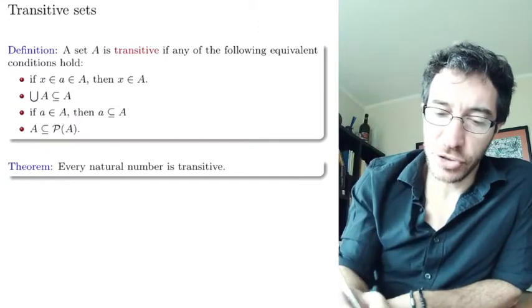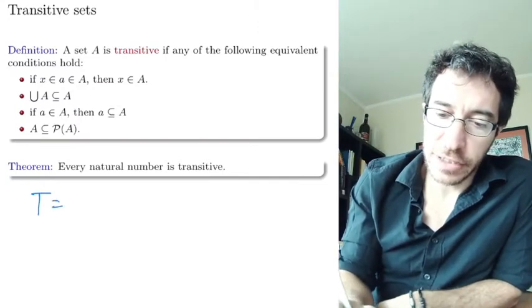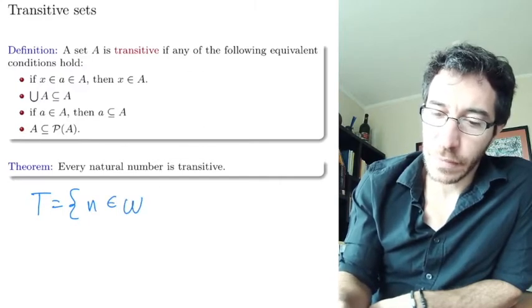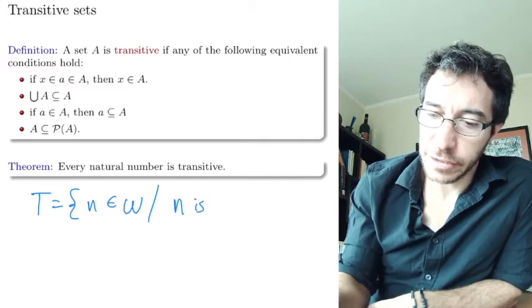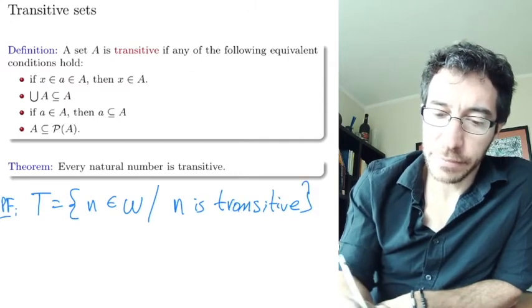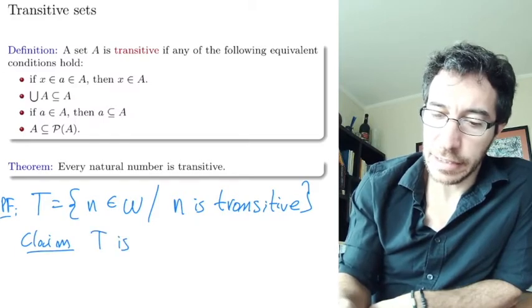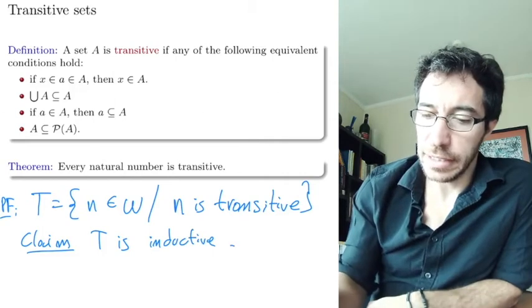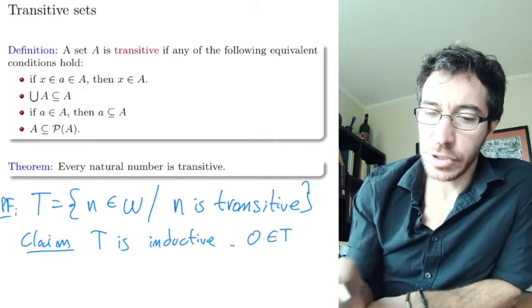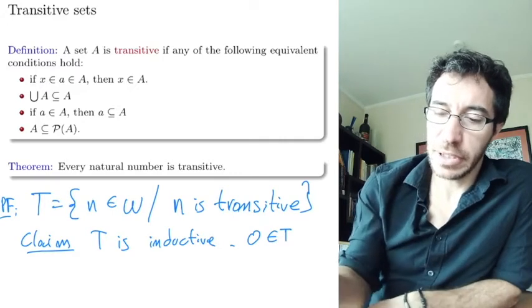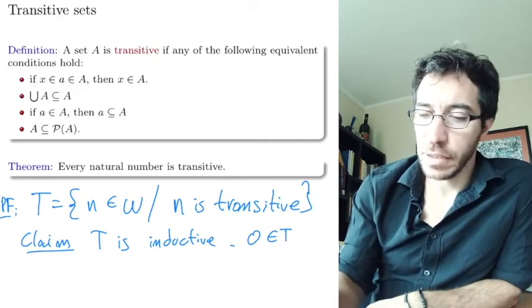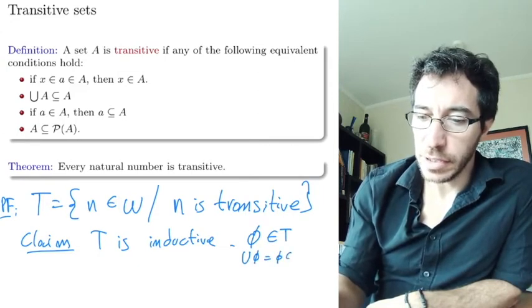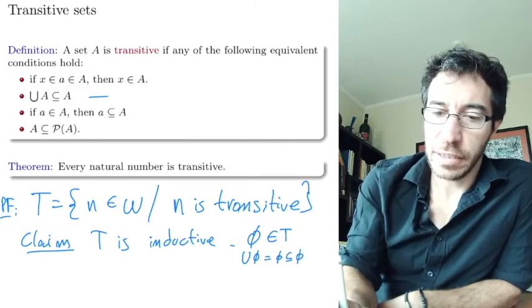Let T be the set of all n in the natural numbers such that n is transitive. The claim is that T is inductive. First, zero belongs to T: the empty set belongs to T because the union of the empty set equals the empty set, which is included in the empty set. So that property is satisfied.